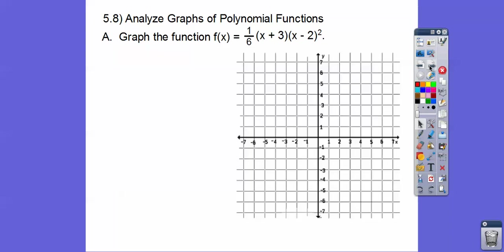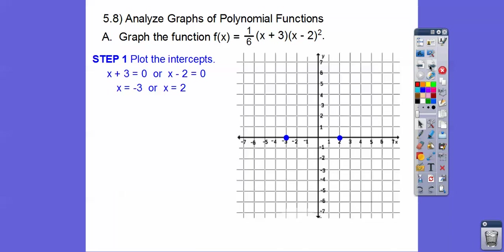Let's analyze graphs of polynomial functions. We're going to graph f(x) = (1/6)(x + 3)(x - 2)². We've done this already in a couple of other lessons. The first thing we do is get the intercepts — set each factor equal to 0. We get x = -3, and setting the other factor to 0 we get x = 2. And 2 is a double root because it's being squared.